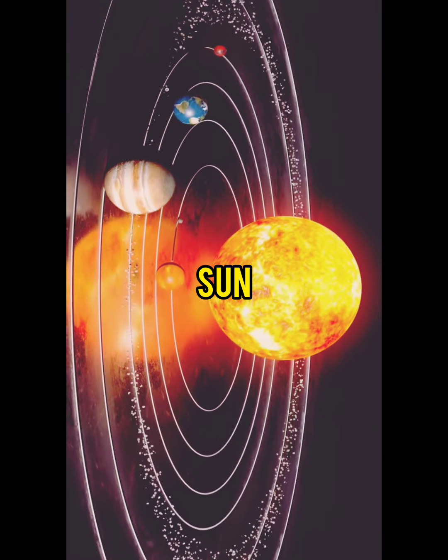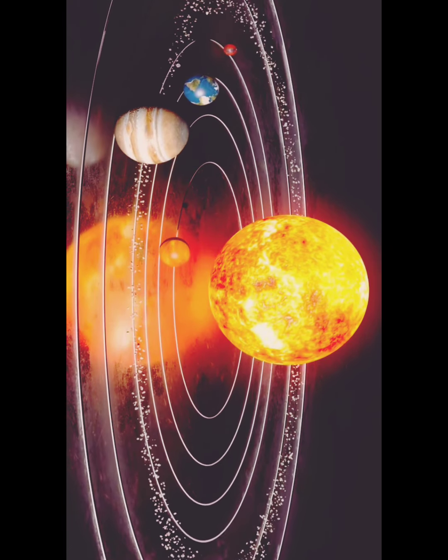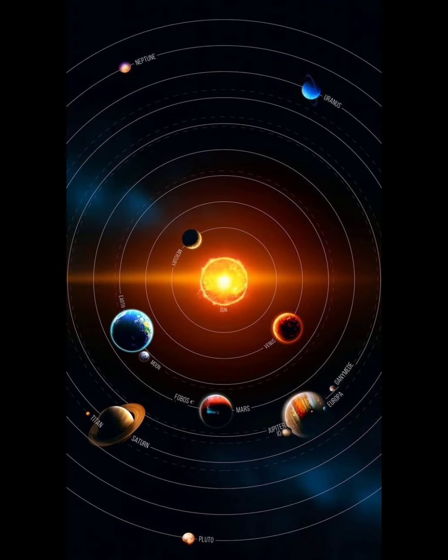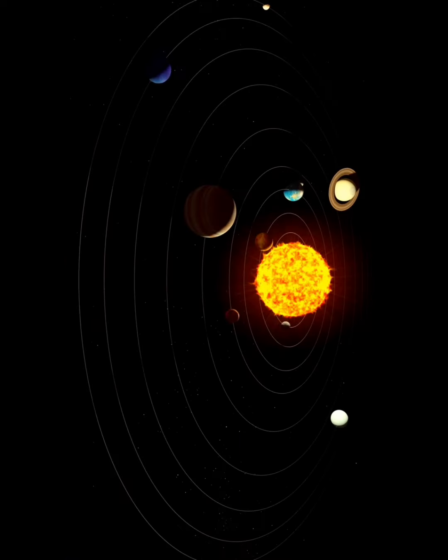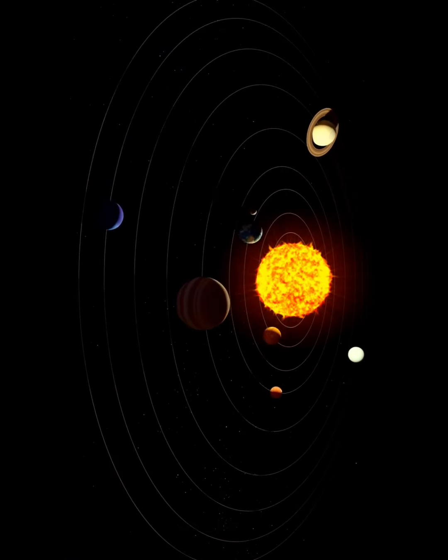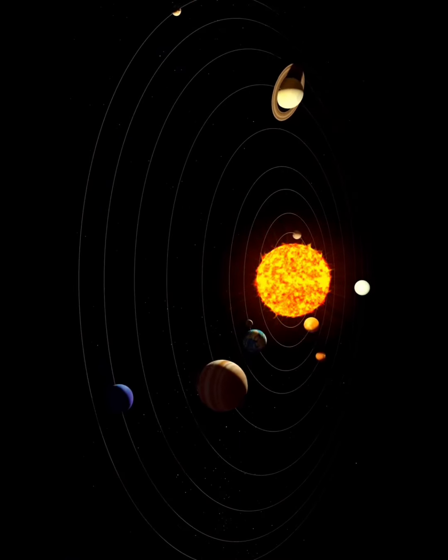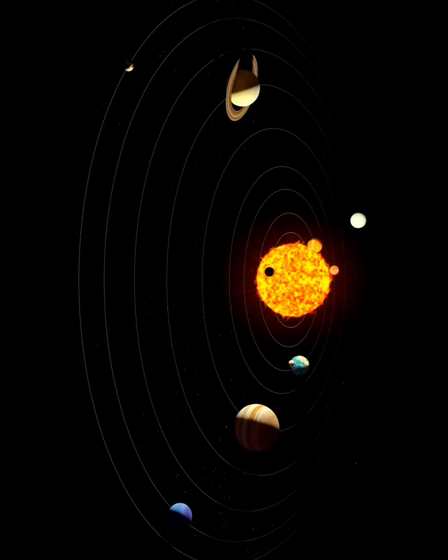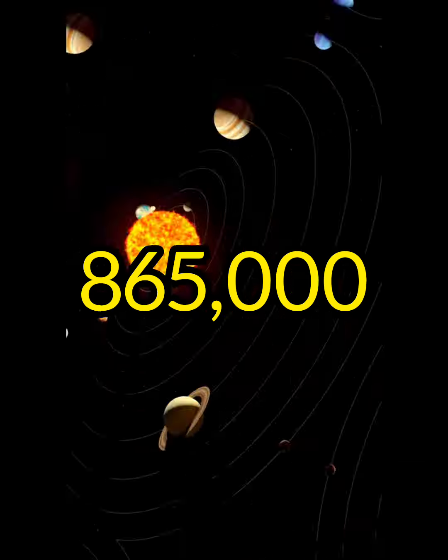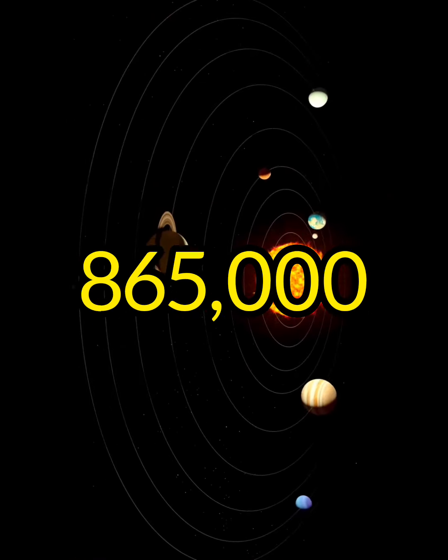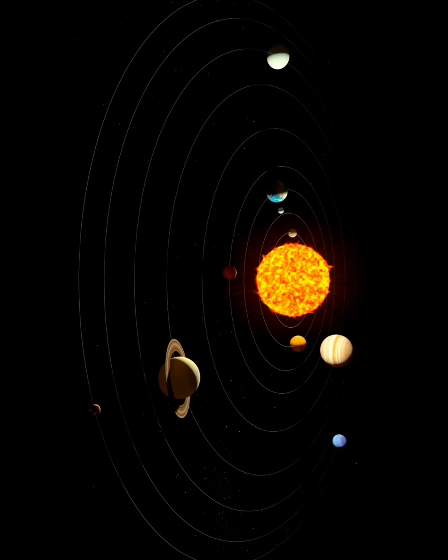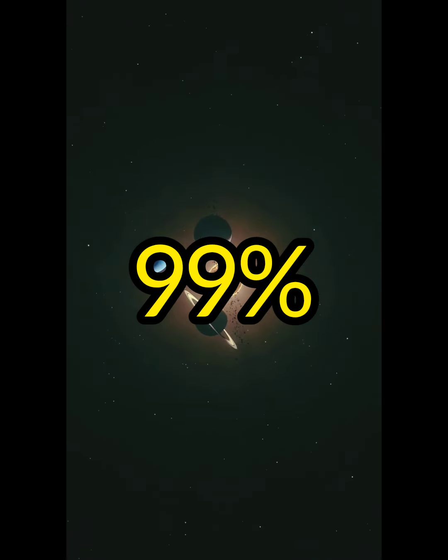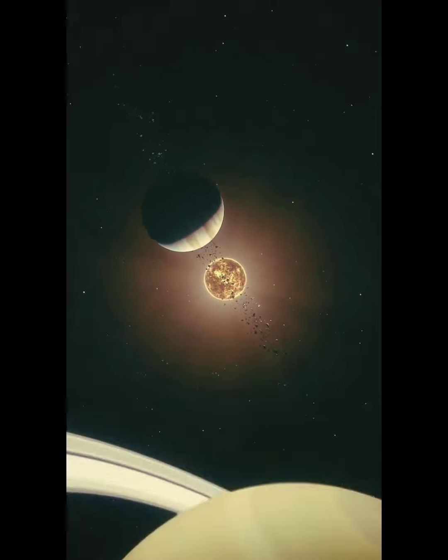At the center of the solar system is a star called the sun. It is the largest object in the solar system. Its diameter, or distance through its center, is 865,000 miles. In addition, the sun contains more than 99% of all the material in the solar system.